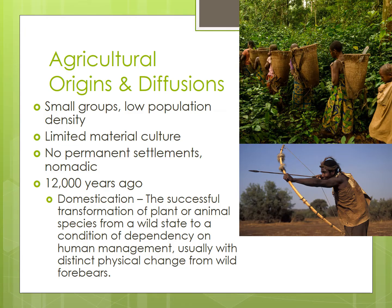Then around 9 to 10,000 BCE, or around 12,000 years ago, a process began to occur known as domestication — the successful transformation of plant or animal species from a wild state to a condition of dependency on human management, usually with distinct physical change from wild forebearers.